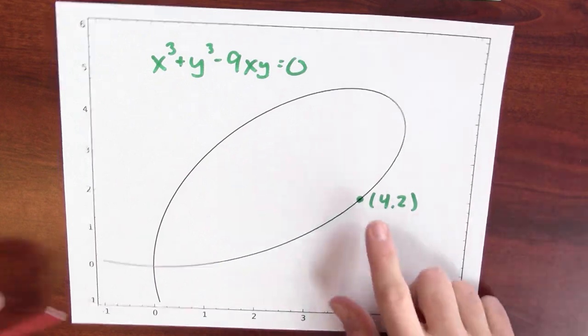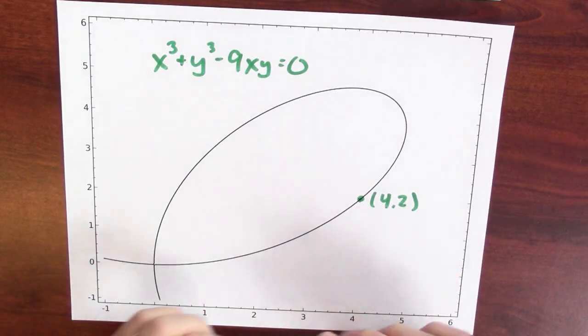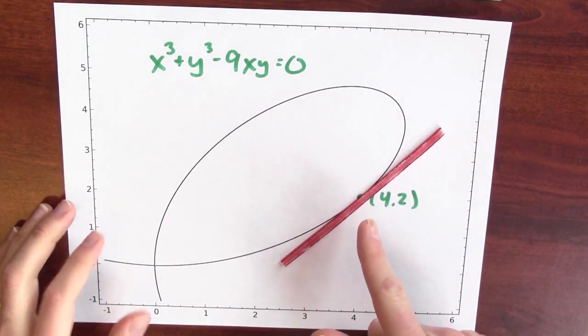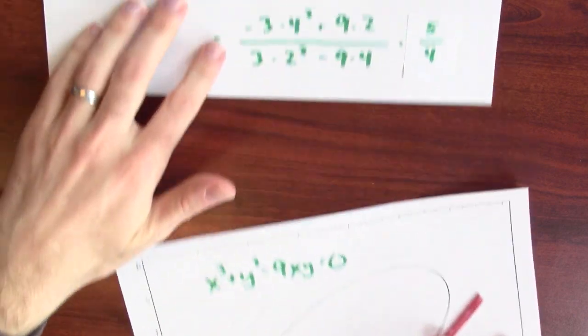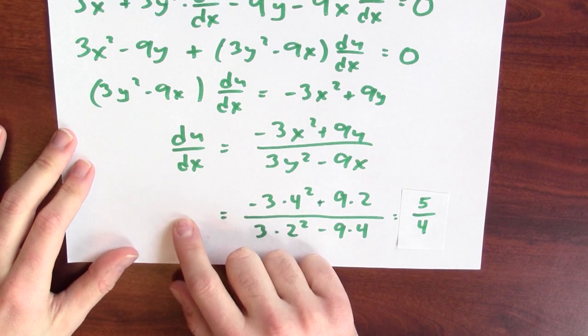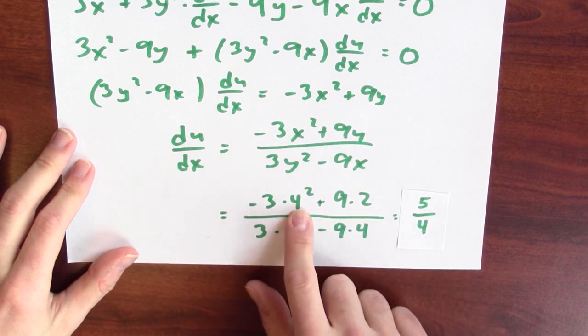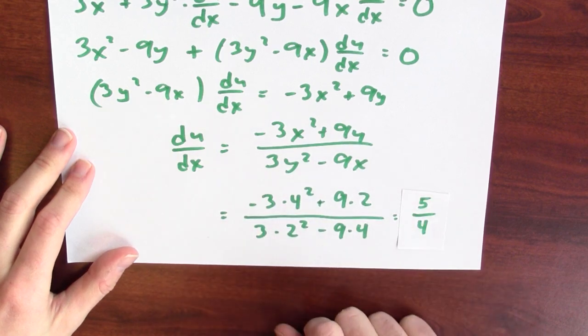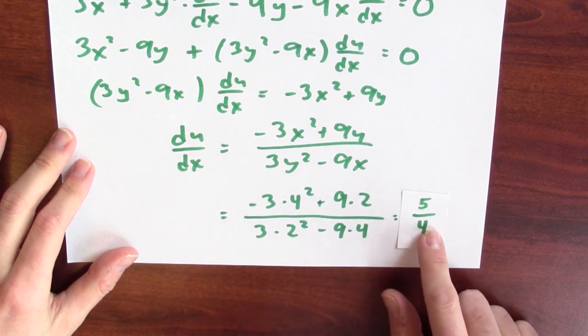And you can see it's really working. I can pick a point, like the point 4, 2, and ask what's the slope of the tangent line to the curve through the point 4, 2. And if we go back to our calculation, the derivative of y with respect to x, if I plug in 4 for x and 2 for y, I get that the slope of the tangent line to that point is 5 fourths.